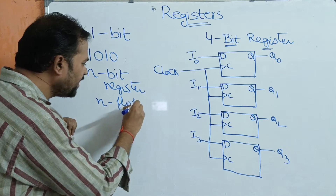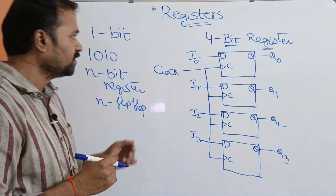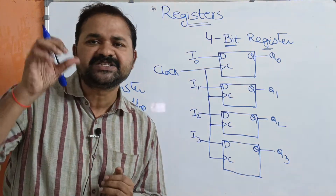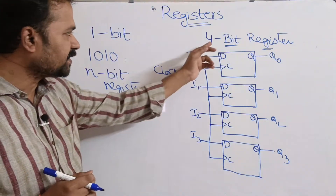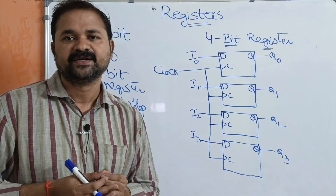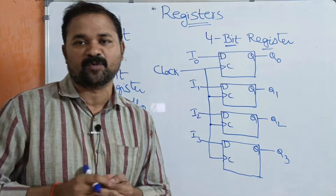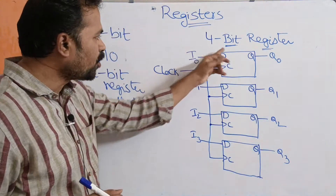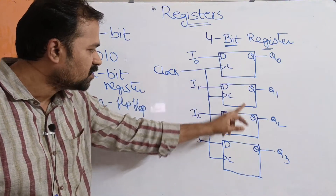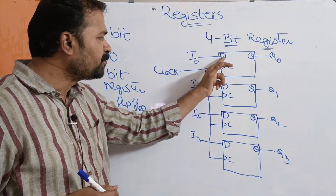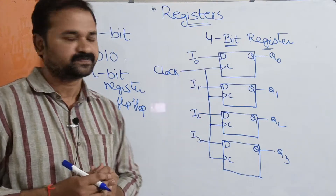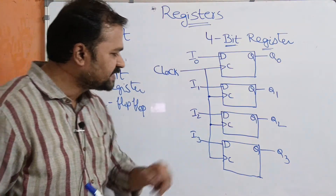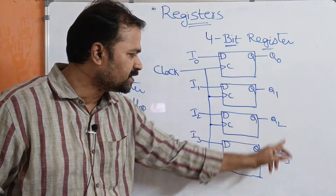Let's take an example of the four-bit register. It is a collection of four flip-flops where each flip-flop can store one bit of data. To store information, we use D flip-flops — D stands for data. A D flip-flop accepts one input and produces one output. Here we are drawing a four-bit register with four D flip-flops. The inputs are I0, I1, I2, I3 and the outputs are Q0, Q1, Q2, Q3.